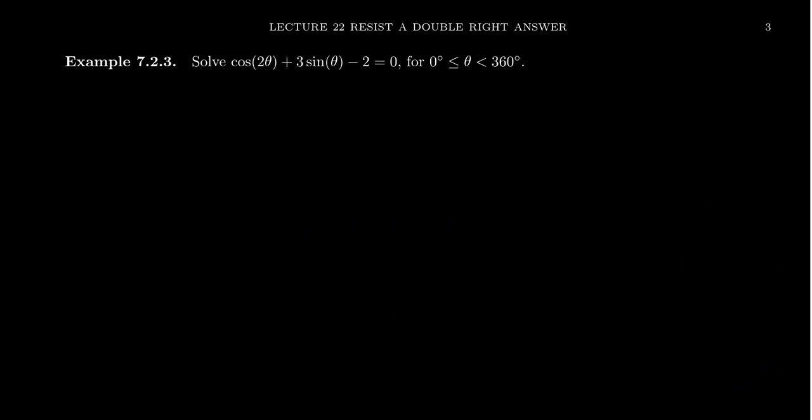When it comes to the double angle for cosine, there's a little bit more flexibility because there's a few more options. Consider the example cosine of two theta plus three sine theta minus two equals zero. And again, let's solve it on the domain zero to 360 degrees.